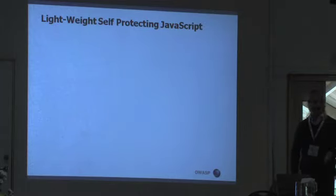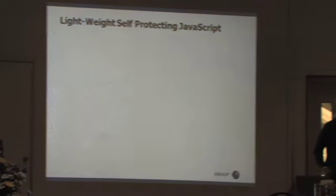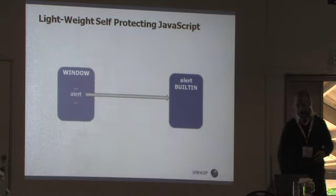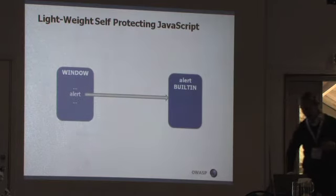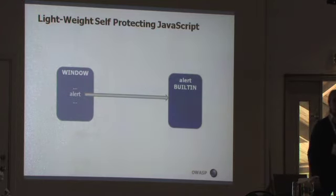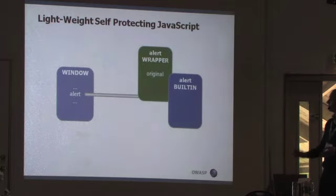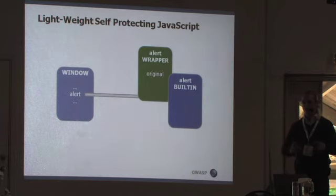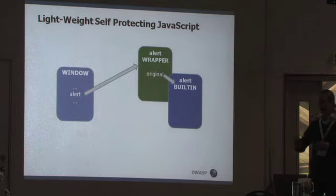Lightweight self-protecting JavaScript is an approach to mitigate cross-site scripting. Briefly, we have a number of built-ins in the browser, and the window object points to those built-in methods. The approach uses aspect-oriented programming techniques to wrap the built-ins. You create wrappers that will enforce some policy before executing the built-in, and redirect the pointer to the wrapper instead of to the built-in directly.